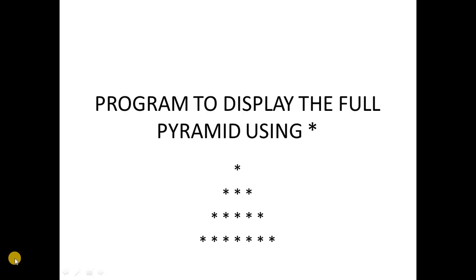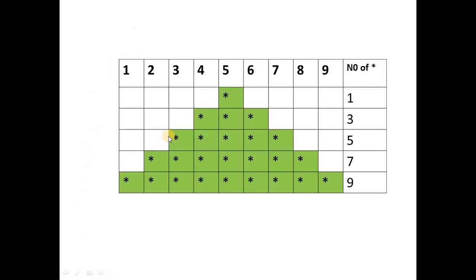Greetings everyone. Today we discuss the program to display a full pyramid using stars. We are going to display the stars as a pyramid. Each single line takes some 72 characters — you will have a space on your screen. Our star is placed in the middle, and in the second row another three stars are displayed, and so on in this pyramid structure.